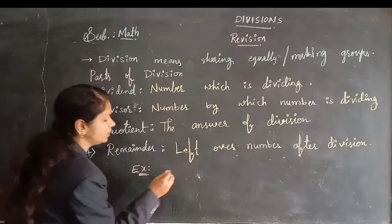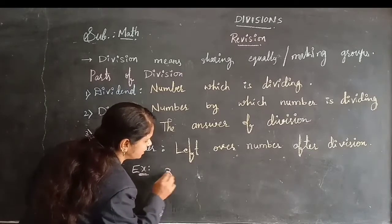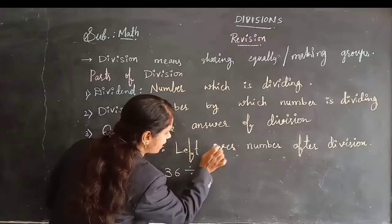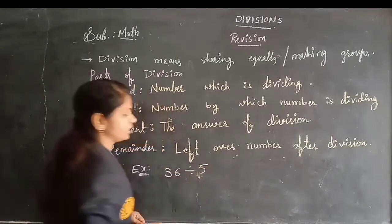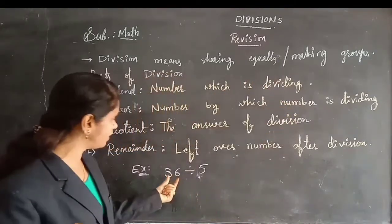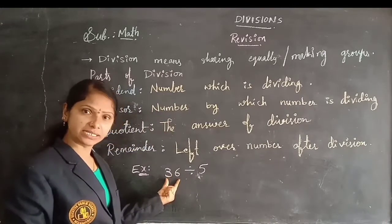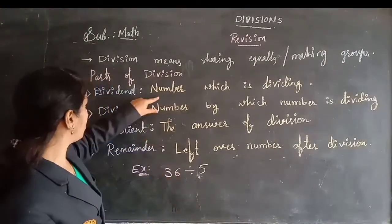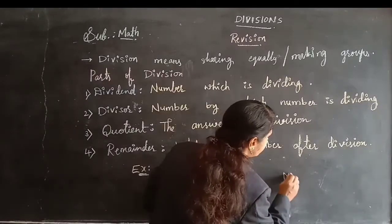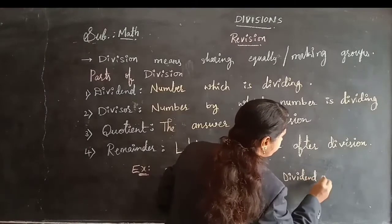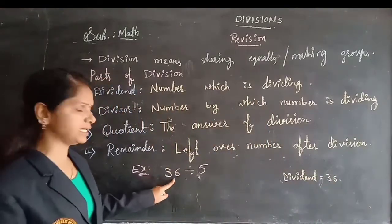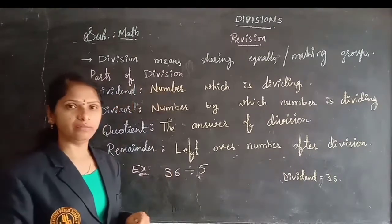Let's see an example. The dividend number — I am dividing 36 by 5. Which number are we dividing? We are dividing 36. This number is called the dividend. In this problem, dividend equals 36. This number we are selecting to divide — that number is called dividend.